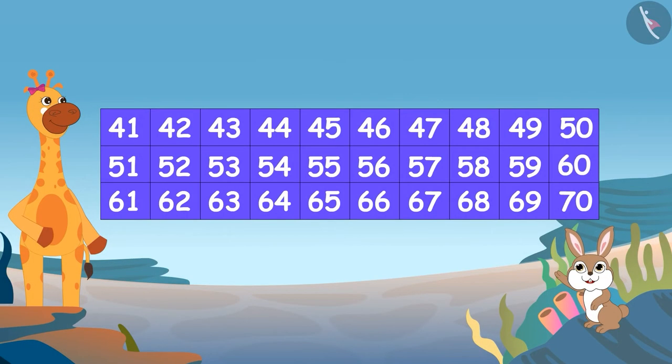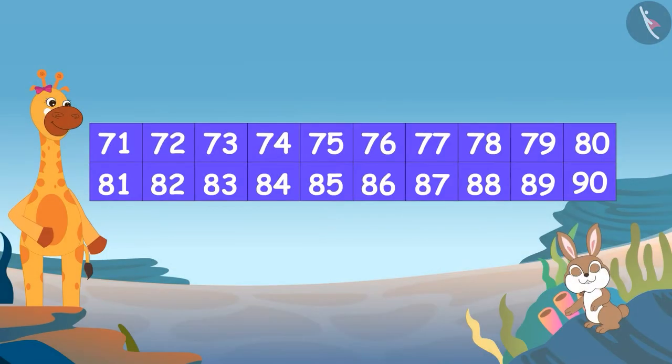Can you find the number 60 in the grid? Correct. This box has the number 60 written on it. Can you find the box that has the number 83 written on it?